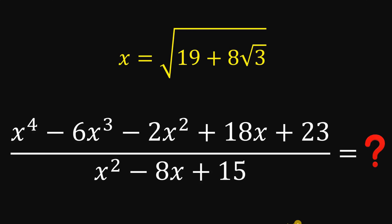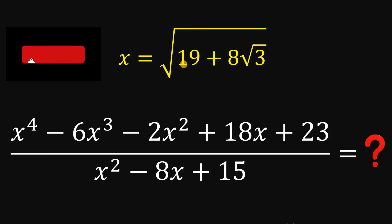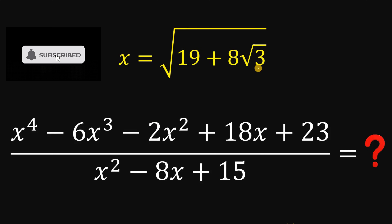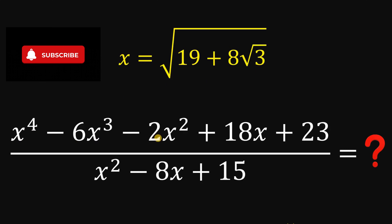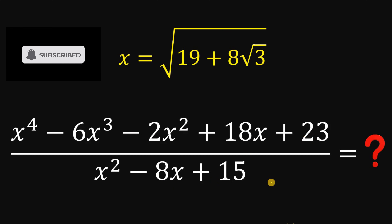Can you solve this math Olympiad challenge? Here's the question. Given that x equals the square root of 19 plus 8 times the square root of 3, the goal is to evaluate the expression: x to the fourth power minus 6x cubed minus 2x squared minus 18x plus 23, all over x squared minus 8x plus 15.